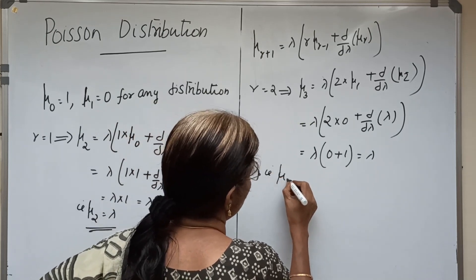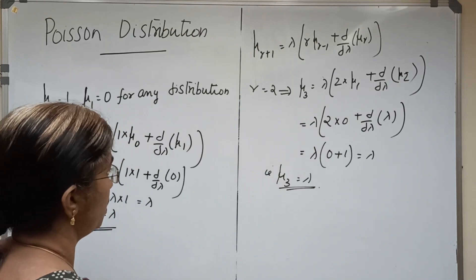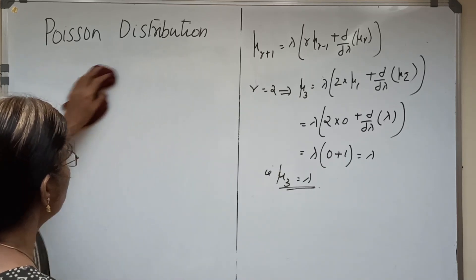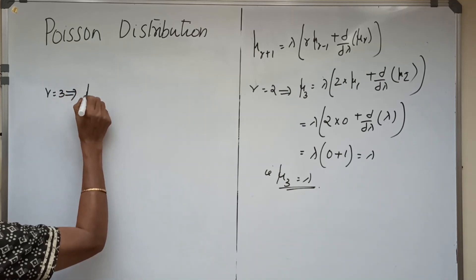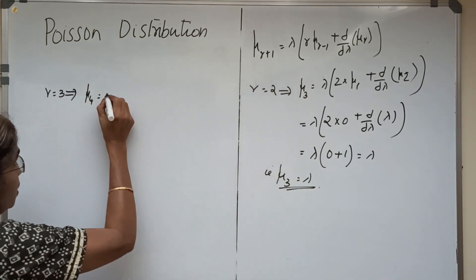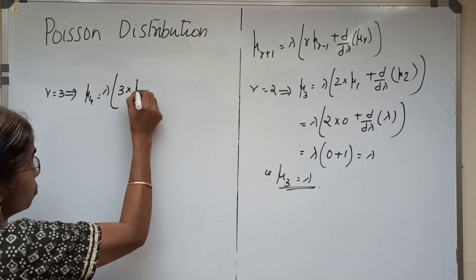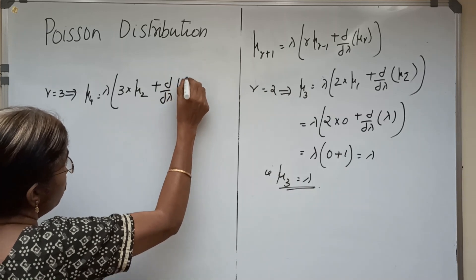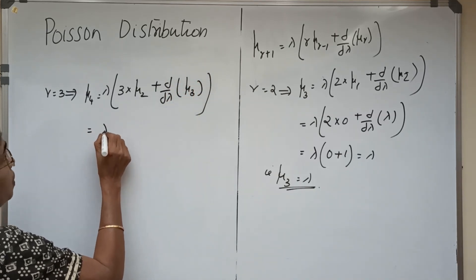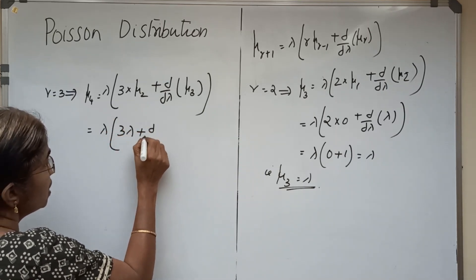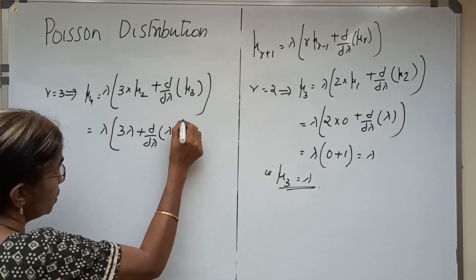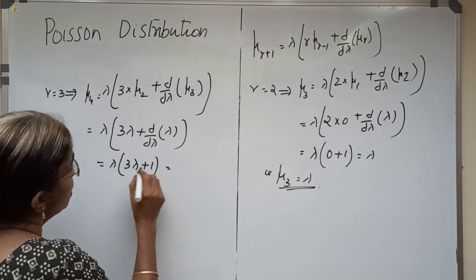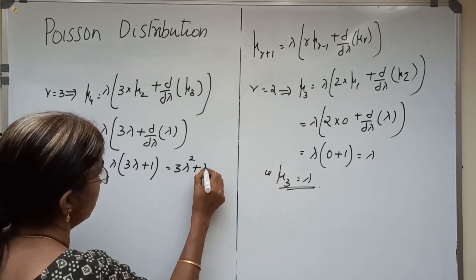Putting r = 3: μ_4 = λ(3·μ_2 + d/dλ·μ_3) = λ(3λ + d/dλ(λ)) = λ(3λ + 1) = 3λ² + λ. So μ_4 = 3λ² + λ.